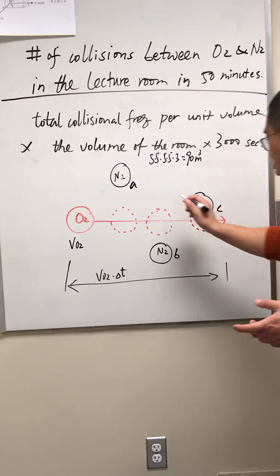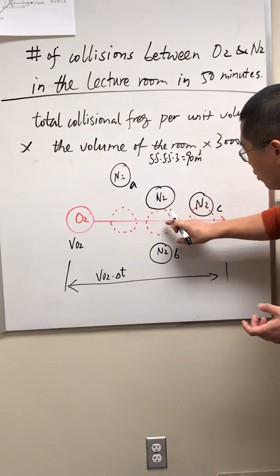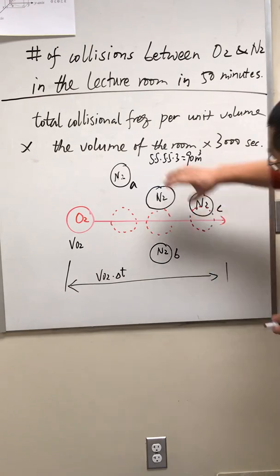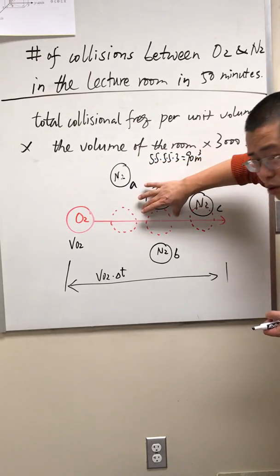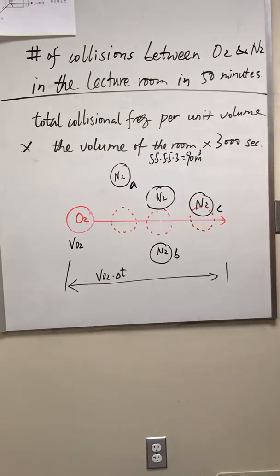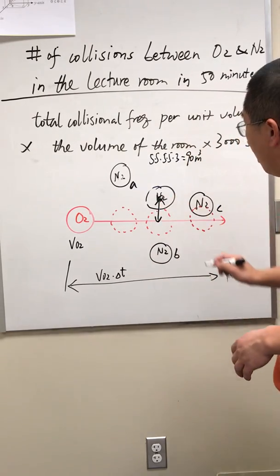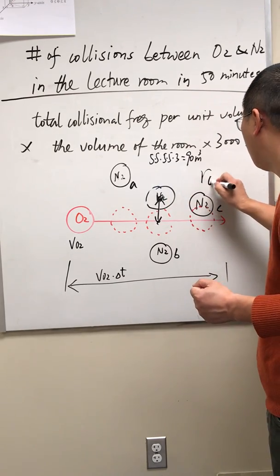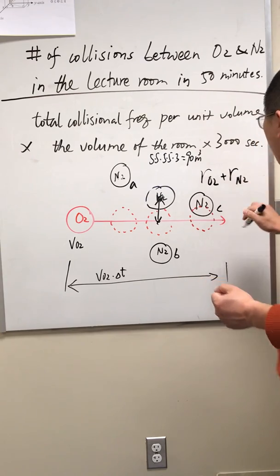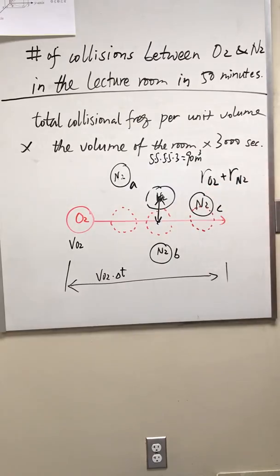The question reduces to counting the number of nitrogen molecules whose centers reside within a certain area. If a nitrogen molecule is just tangent to the O2 trajectory, it's at the boundary: any further away means no collision, any closer means a collision. The critical distance between the center of the N2 molecule and the center of the O2 molecule is simply R_O2 plus R_N2.